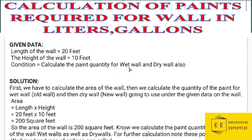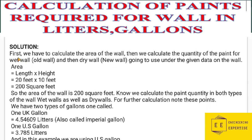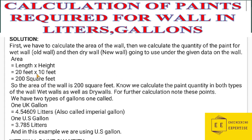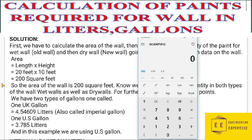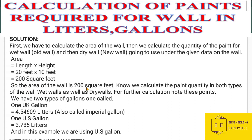We have different thumb rules for wet wall and dry wall. For the solution, first we calculate the area of the wall, then we calculate the quantity of paint for the wet wall (old wall) and then the dry wall (new wall). The area is 20 into 10 feet — on the calculator you will see 200 square feet. So the area of the wall is 200 square feet.